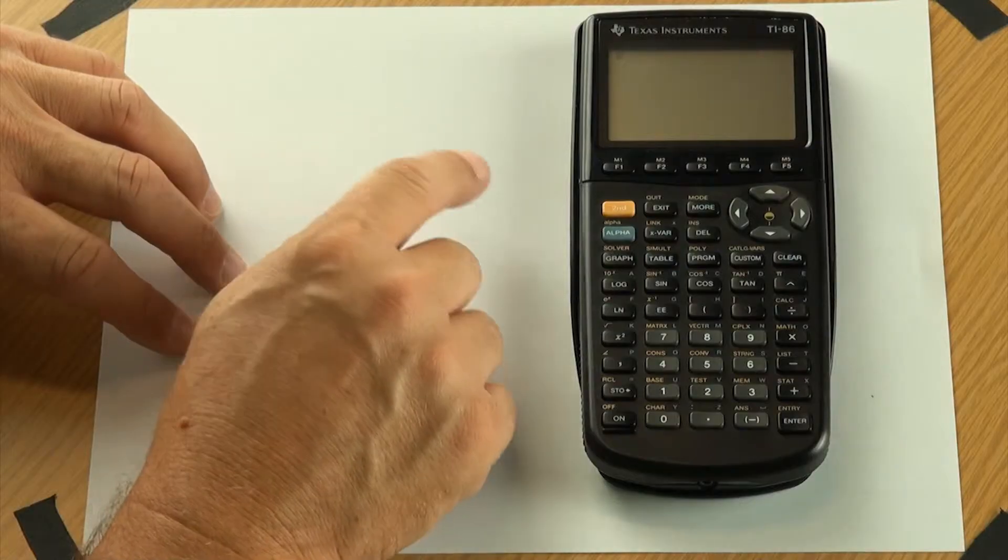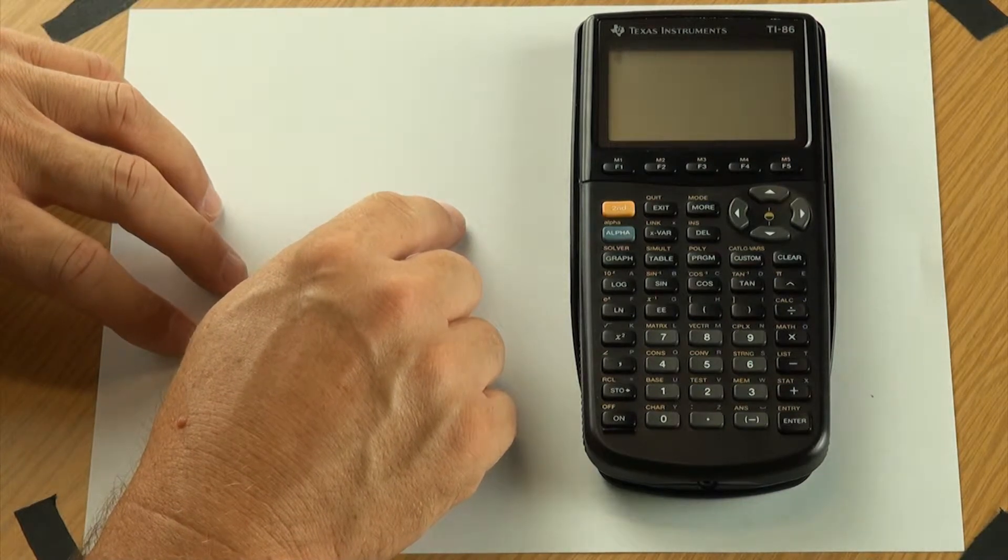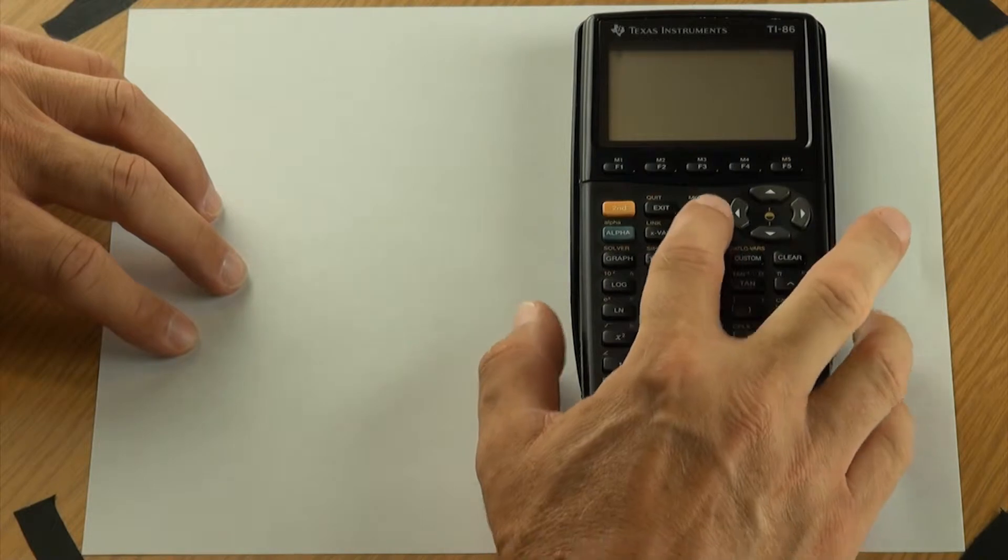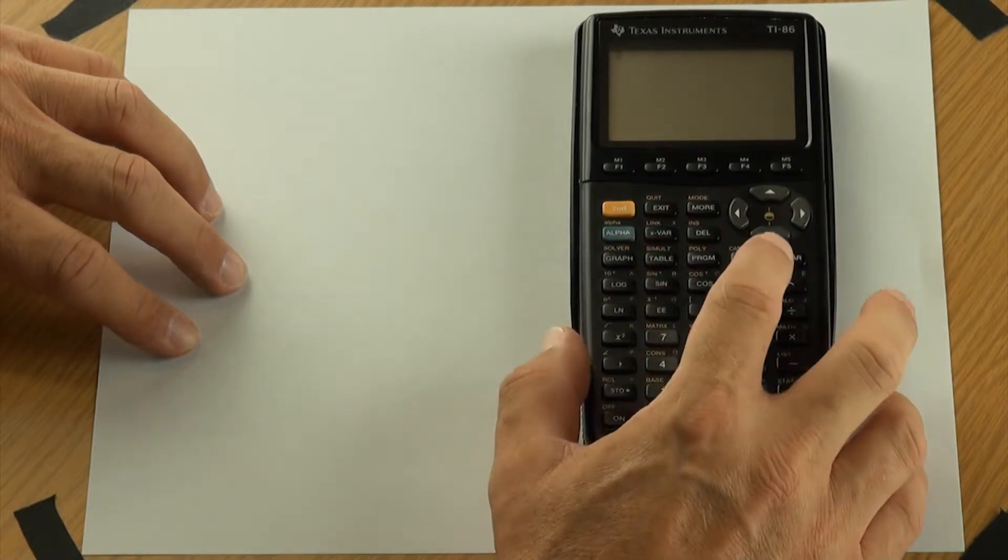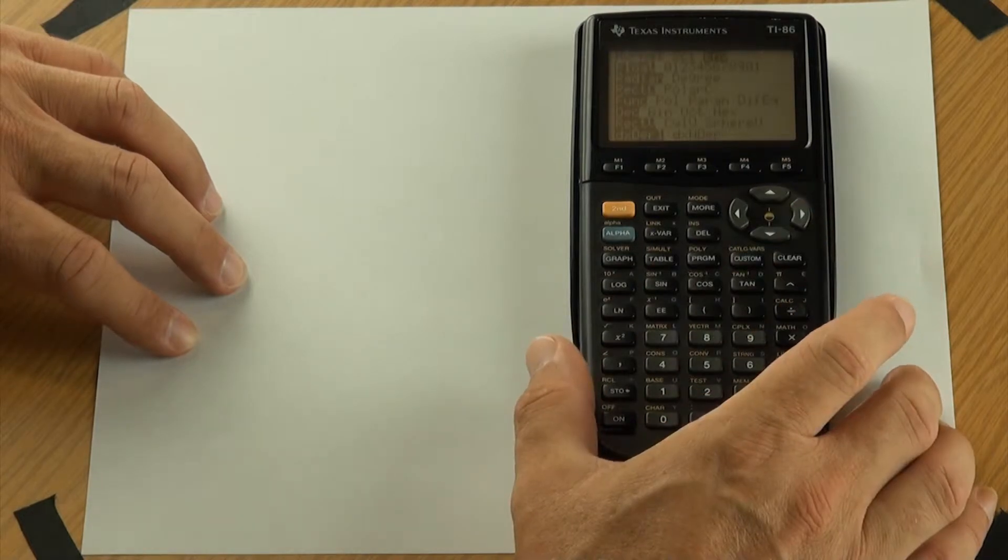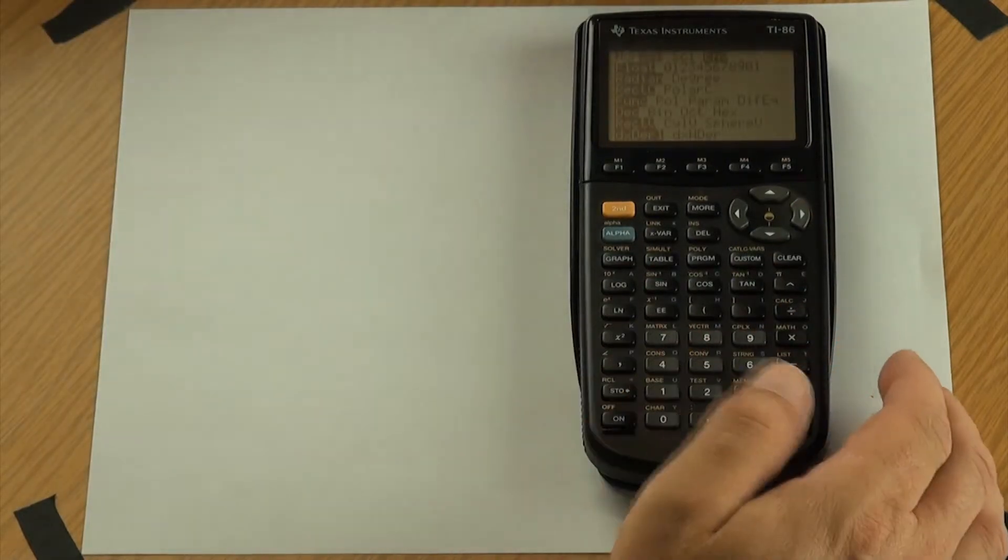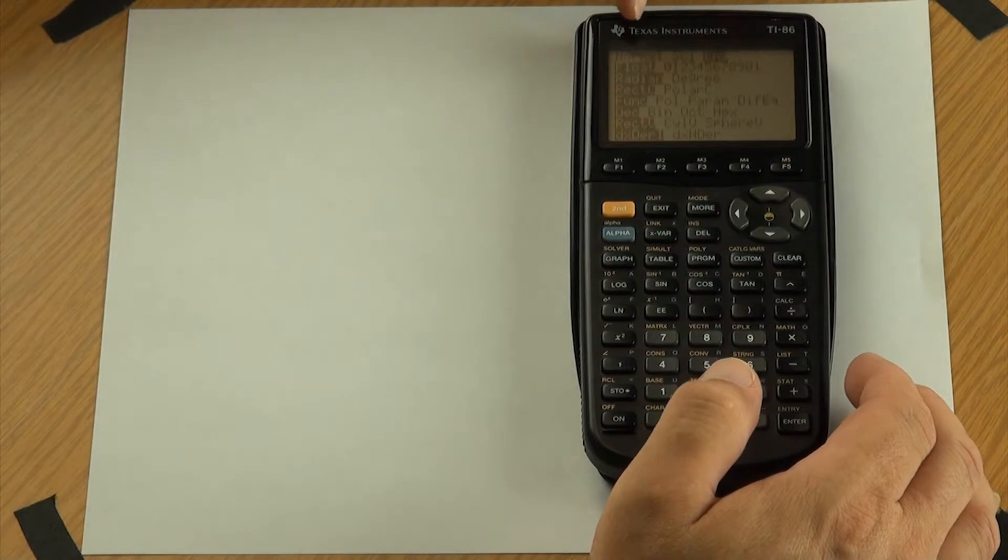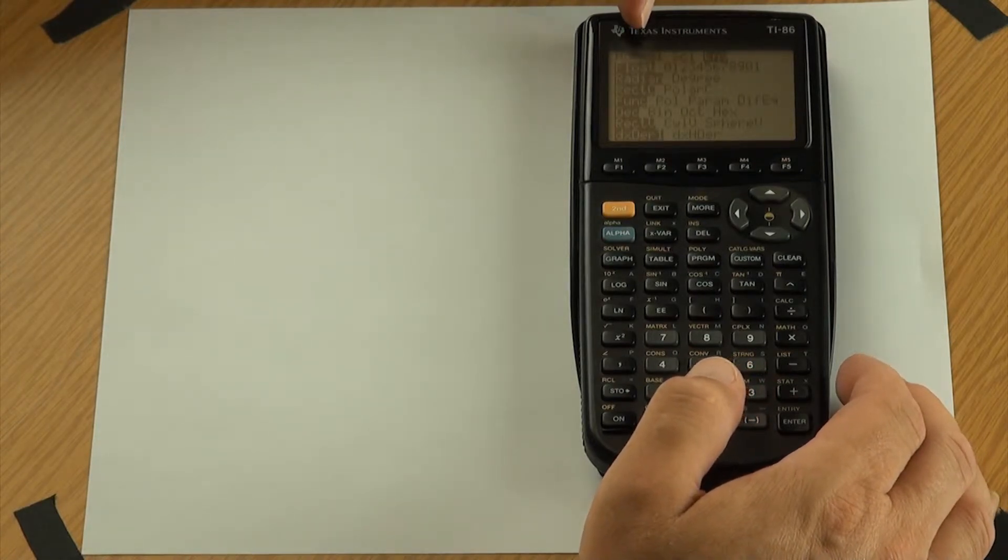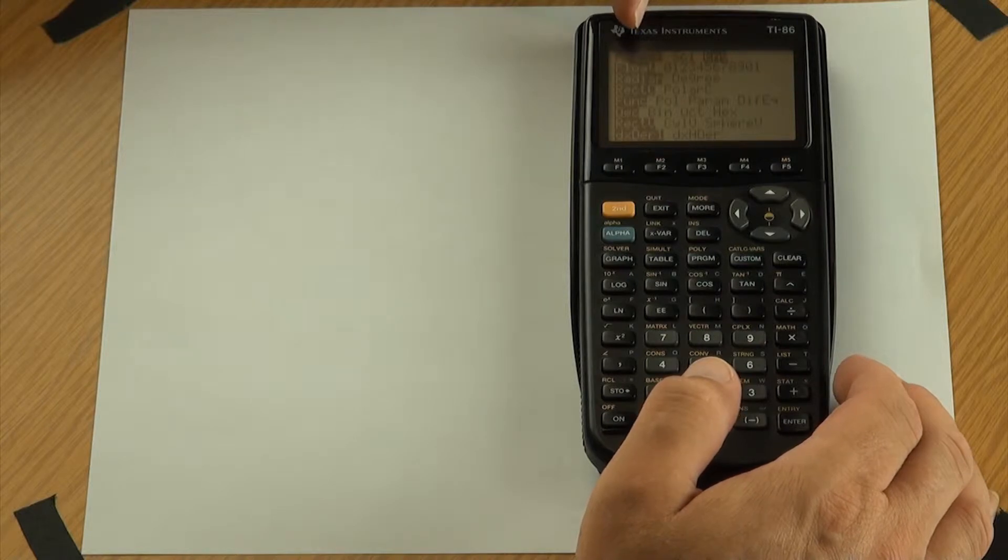When we look at the TI-86, and most of the TIs work basically the same way, there is a menu which is referred to as the mode. When I hit the mode button, I've got to hit second to get it. When I hit the mode button, it actually opens up my menu here. On the top line, what you're looking for are the different modes that are available. I have three options: